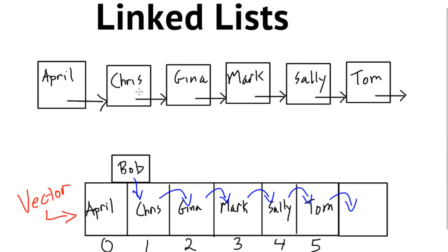We would follow these links all the way through our linked list — that's basically how we traverse it, by following these pointers. At the very end we need some mechanism to indicate we're at the end of the list. This Tom node is our very last node, and his link needs to reference something to indicate that this is the end of our list. Typically you have some terminating value like null, which is usually represented by the value zero — it depends on the language, but we'd have some sort of terminating value there.